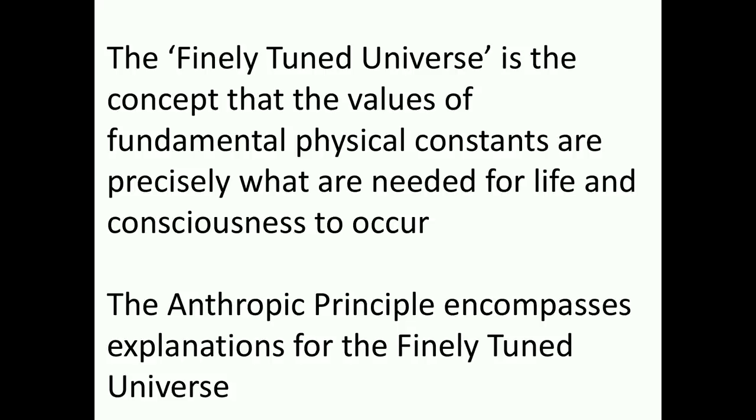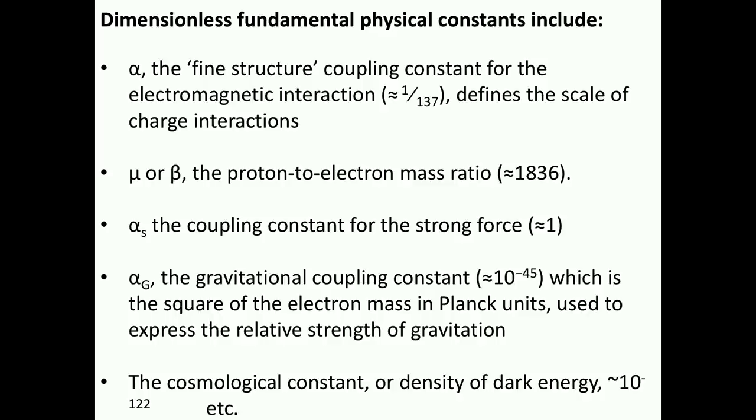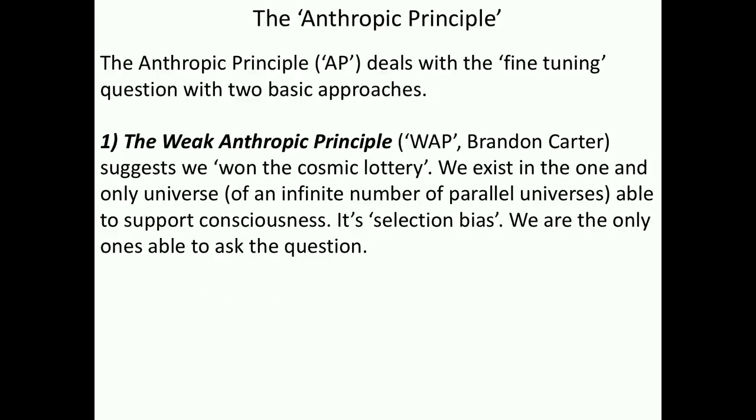It raises the final point, the finely tuned universe is the concept that the values of fundamental physical constants are precisely what are needed for life and consciousness to occur. The anthropic principle encompasses explanations for this finely tuned universe. If things weren't exactly the way they are, we wouldn't be here. Why is that? Well, the things that have to be right are called these dimensionless fundamental physical constants, and I won't go through them, but there are 22 numbers, and if they weren't exactly what they are, we wouldn't have stars with light, we wouldn't have life, and we wouldn't have consciousness. So how did we get so lucky?